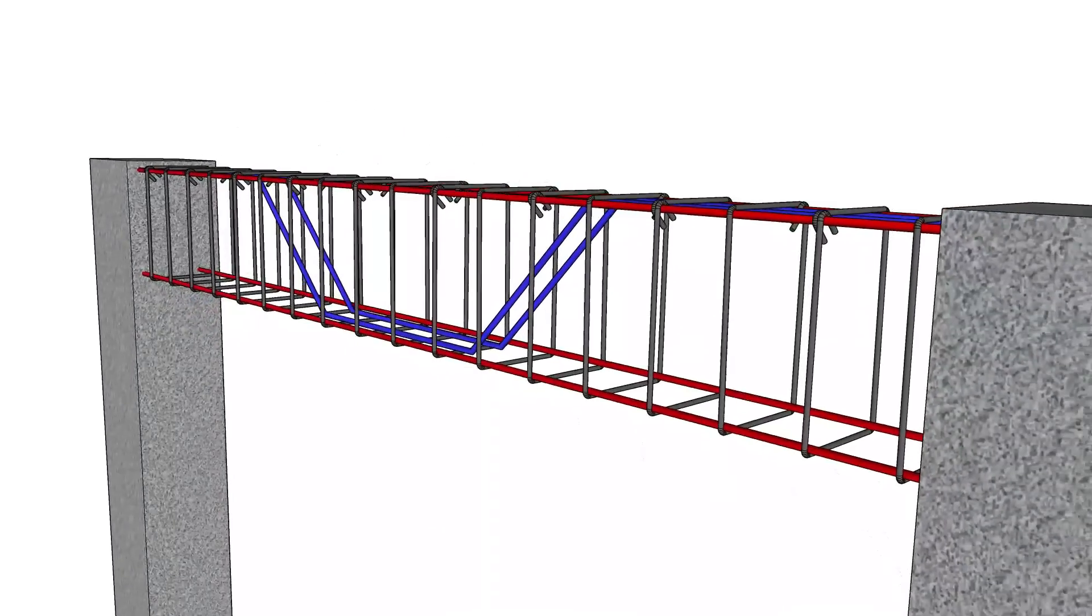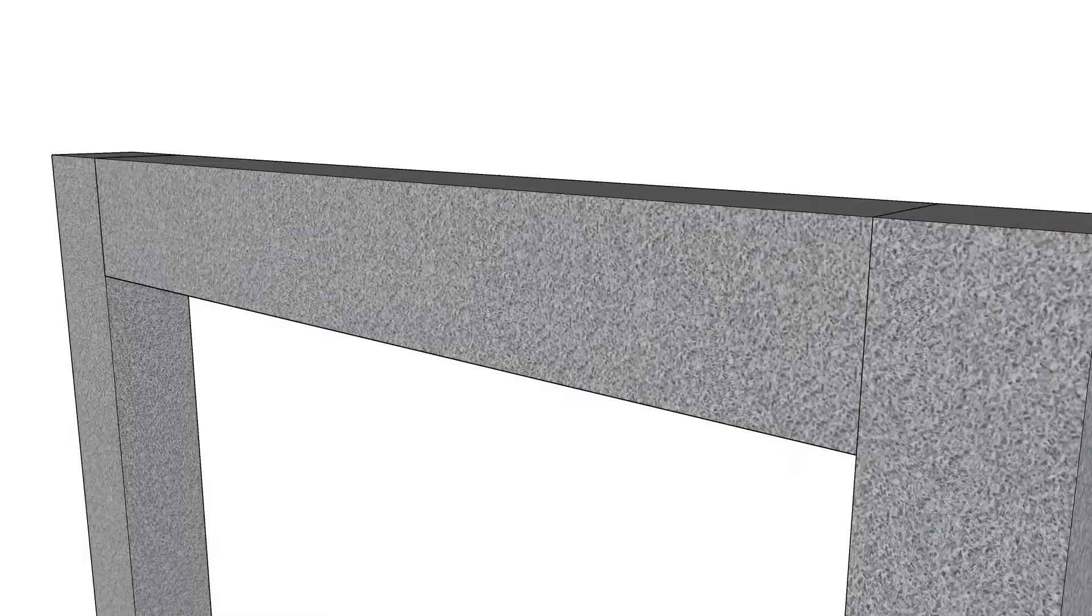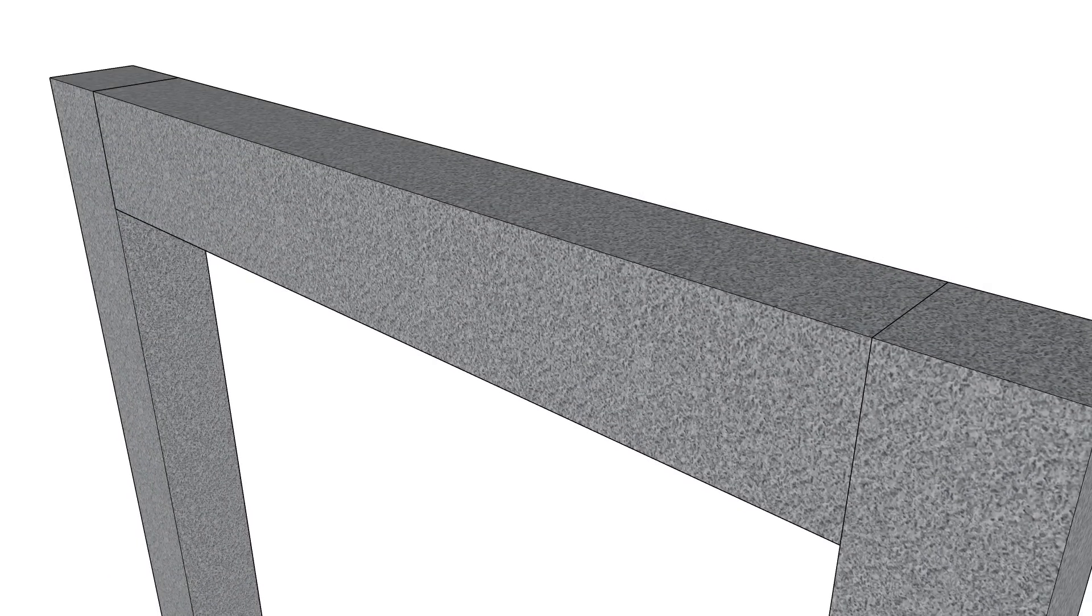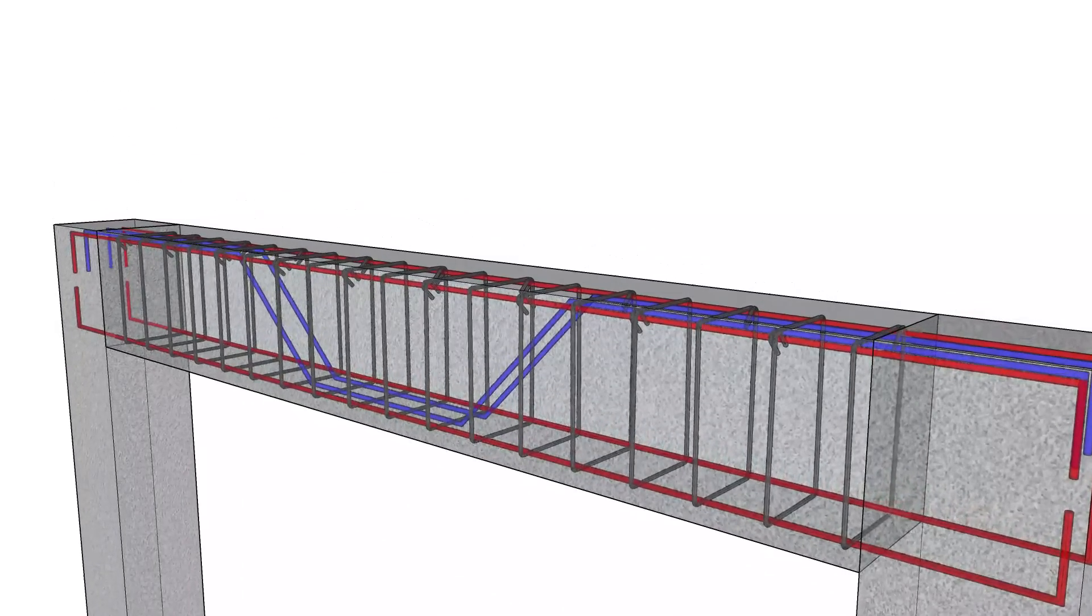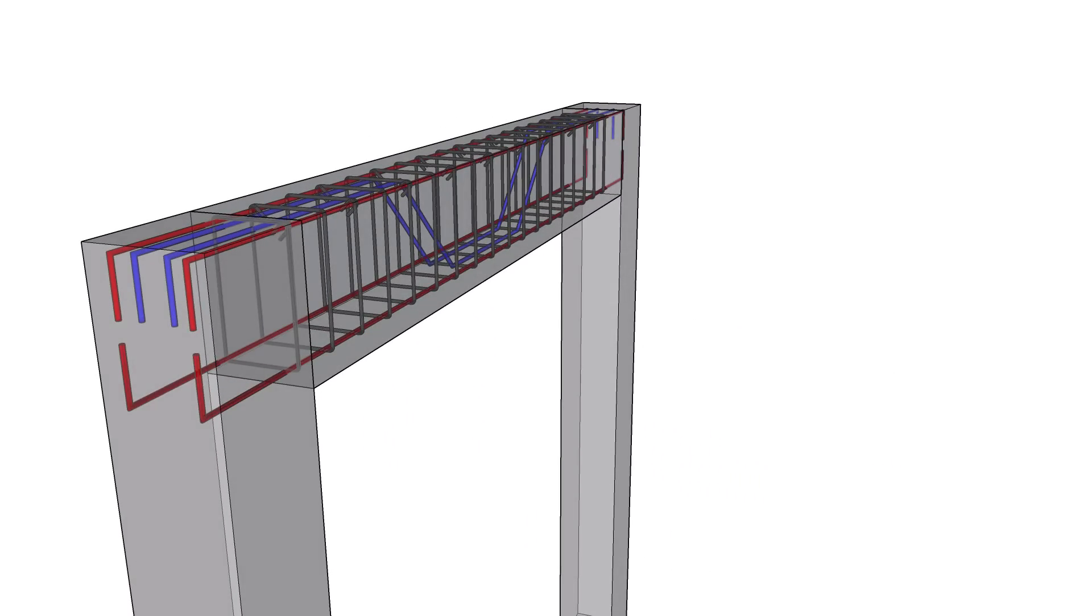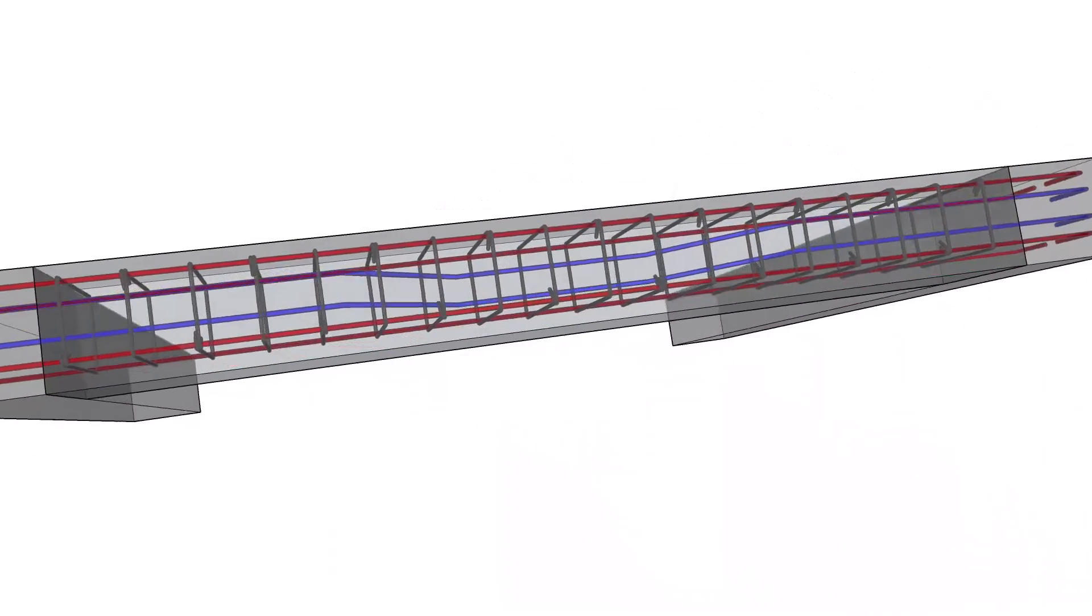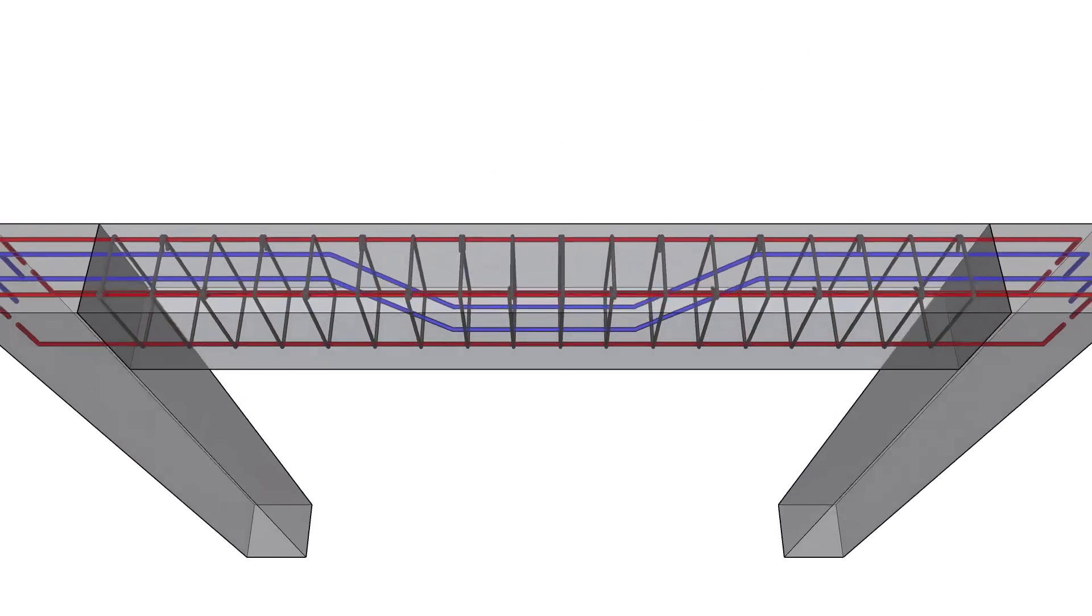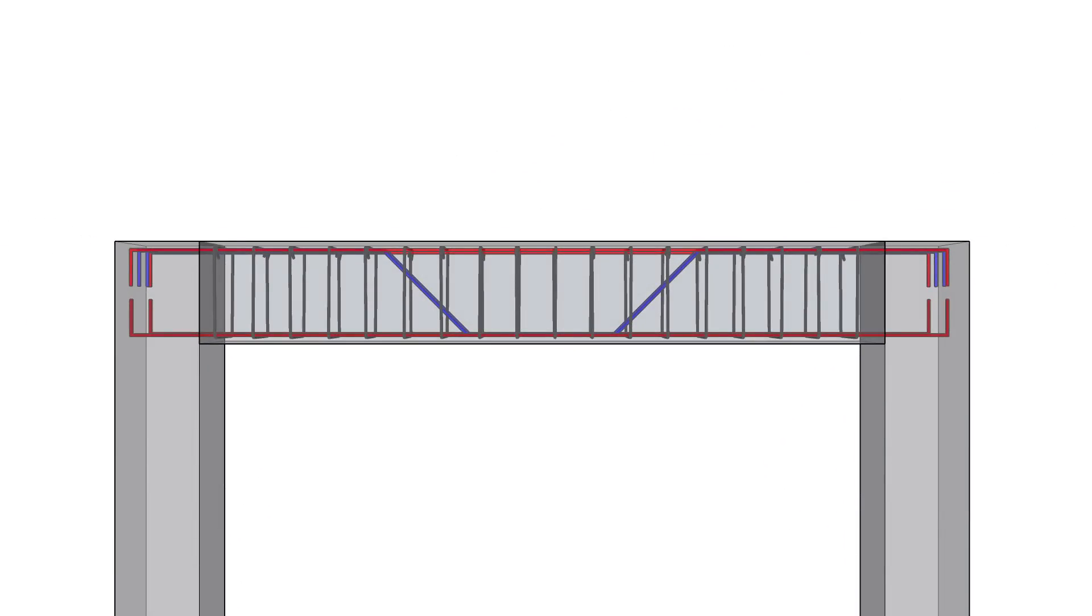Cranked bars allow for optimized reinforcement by avoiding the need for separate bars in certain areas. This design reduces the overall amount of reinforcement needed, making the structure more cost-effective without compromising on safety. Ultimately, we position these bars within the columns to ensure adequate anchorage.